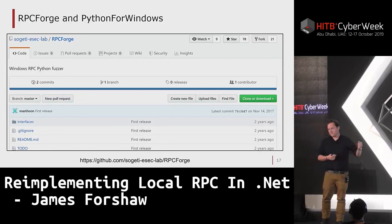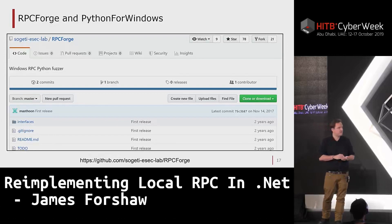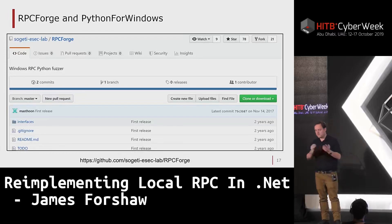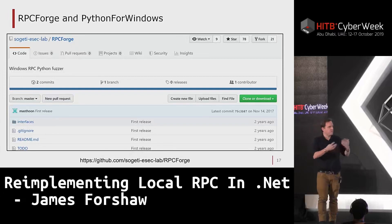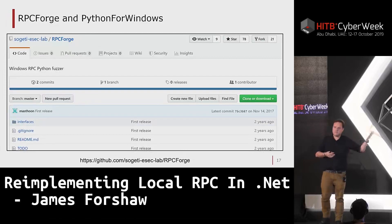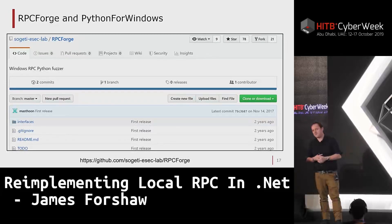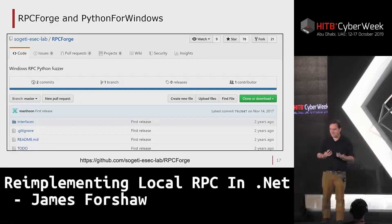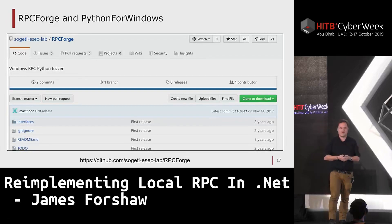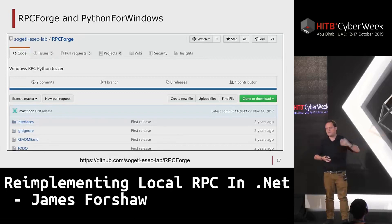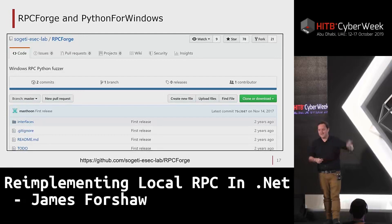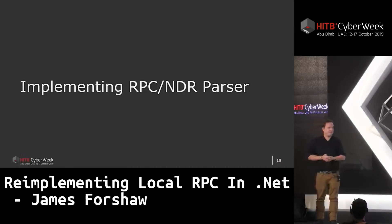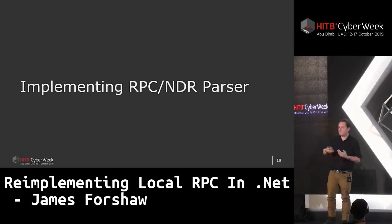That prior work — RPC Forge — is two years old with no updates, and the tooling to generate interfaces was never released. You had to manually create Python interfaces, which sounds unpleasant. It's also not updated to Python 3. None of that really helped me from a .NET perspective anyway, so I had no real choice but to implement this myself. Let's go into the things I actually had to deal with when implementing this.